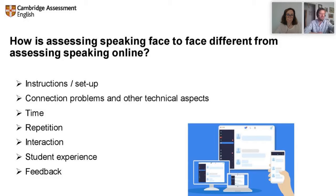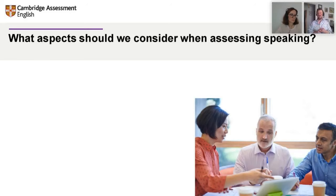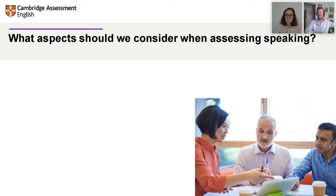Instant feedback is not going to be as easy, but a lot of the platforms and resources we're using can allow for different means and types of feedback. We'll look at feedback at the end of today. When assessing anything, we have to know what it is we're looking at — what are we trying to elicit from the students, and what criteria or rubrics are we using to assess that? So, what aspects should we consider when assessing speaking?